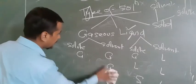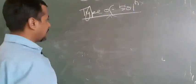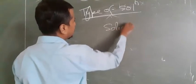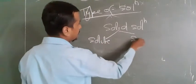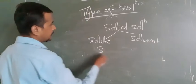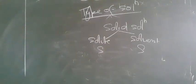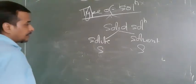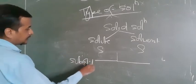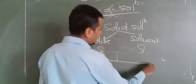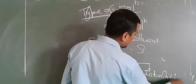Now let us focus on some more important things. First, about solid solution, in which both components are solid. These are basically known as alloys. There are two types: one is known as substitutional solid solution, and the second is known as interstitial solid solution.